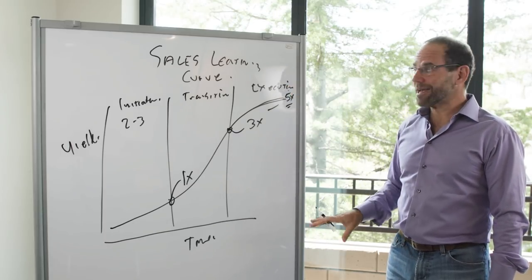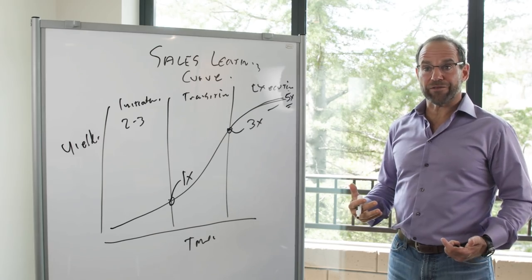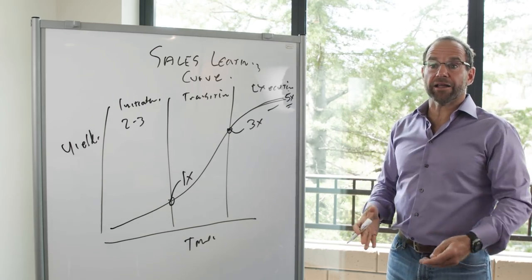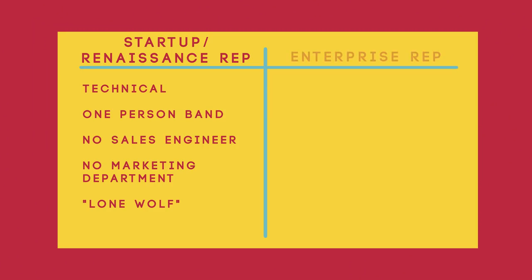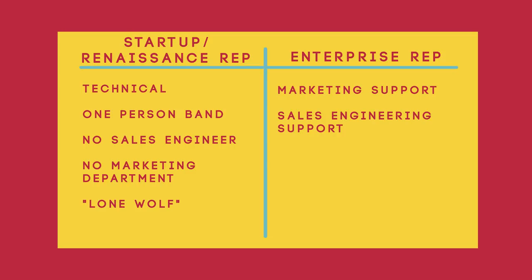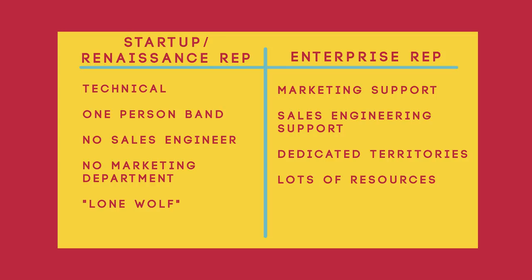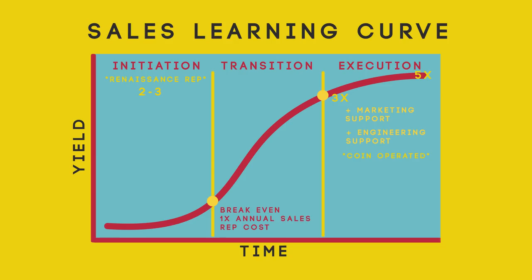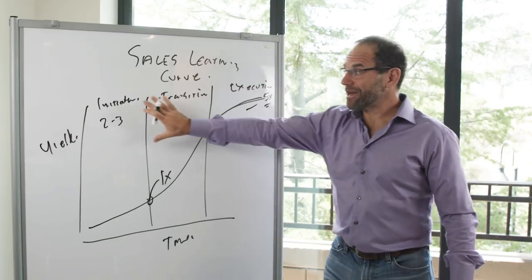A startup person in the execution phase will say the sales organization is too bureaucratic — there are too many rules, I can only sell in one zip code. Enterprise reps from large environments have all the marketing support, all the sales engineering support, and dedicated territories. People coming out of large environments are very used to having a lot of resources at their disposal. Those people will not work well in the initiation phase. Even if they crushed their number at a previous organization, it's a mismatch for where you are and the skills required.